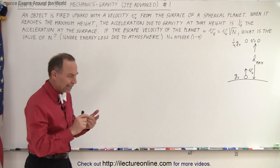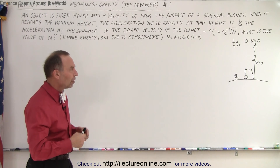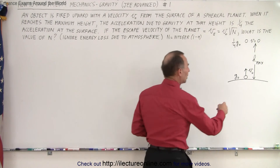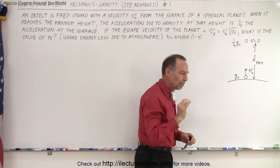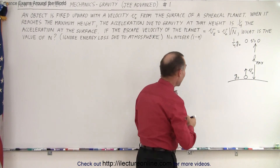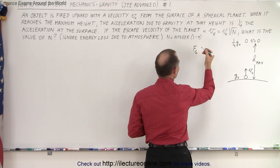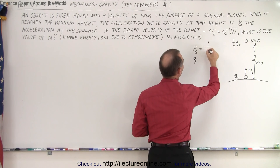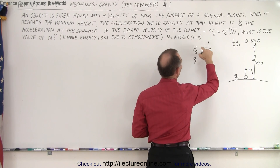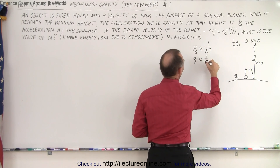We need a strategy and some equations. First, we need a relationship between the maximum height and these numbers. With the universal equation of gravity, the force of gravity — and therefore the acceleration due to gravity — is proportional to 1 over r squared.